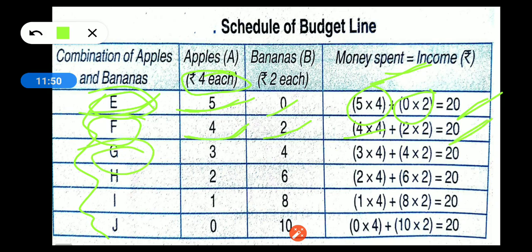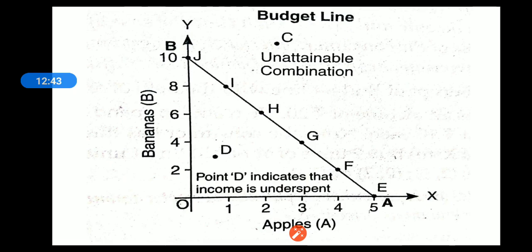Continuing the combinations: 2 apples cost 8 rupees, leaving 12 rupees for bananas — at 2 rupees each that gives 6 bananas. These various combinations all total exactly 20 rupees. The key point to remember is that on the budget line, every combination costs exactly 20 rupees — the entire budget. You can verify this by checking each combination against the budget constraint.